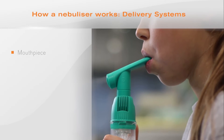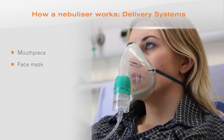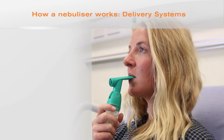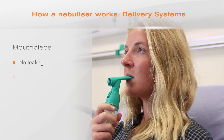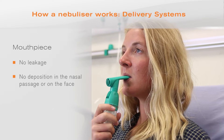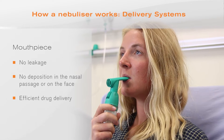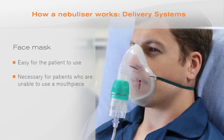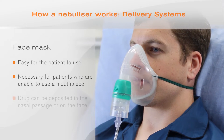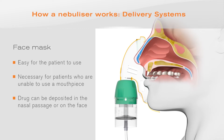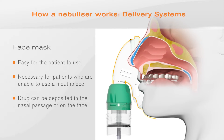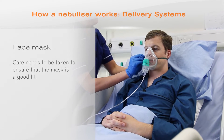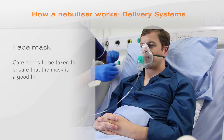This results in a mist of appropriately sized particles that flow out of the chamber. The delivery system can be either a mouthpiece, a face mask, or a T-piece. A mouthpiece is ideal as there is no leakage and no deposition in the nasal passage or on the face, resulting in efficient drug delivery. A face mask is easy to use and necessary when patients cannot use a mouthpiece, though the disadvantage is drug deposition in the nasal passage or on the face. Care must be taken to ensure a good mask fit, particularly around the nose, to prevent drug from getting into the eyes.